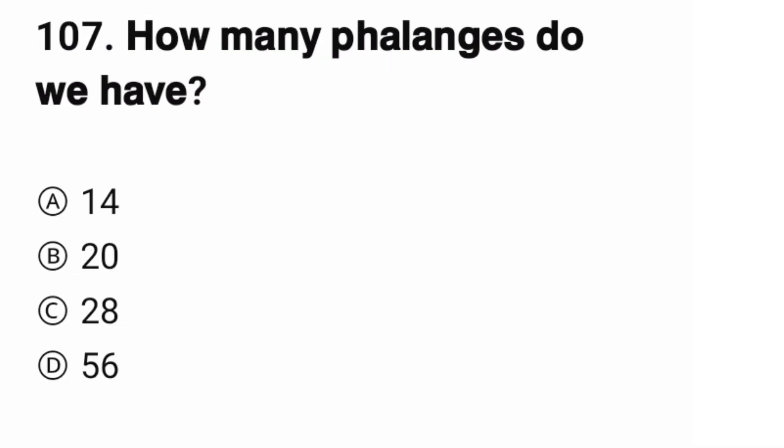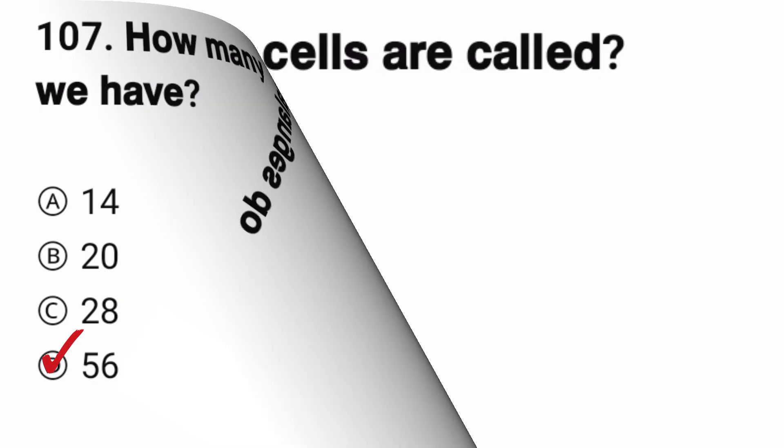Question number 107. How many phalanges do we have? The correct option is D, 56.